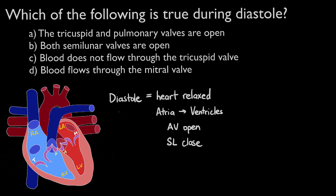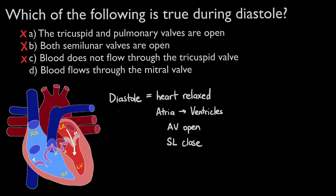Option A states that the tricuspid valve and the pulmonary valve are open. The tricuspid valve will indeed be open to allow blood from the right atrium to go to the right ventricle, but the pulmonary valve will not be open because it prevents blood from flowing from the pulmonary artery back into the right ventricle. So option A is false. Option B states that both semilunar valves are open — they will be closed to ensure blood doesn't flow back into the ventricles, so B is false. Option C says blood will not flow through the tricuspid valve — we know it definitely will, so C is false. Option D says blood flows through the mitral valve — the mitral valve will be open to allow blood to flow from the left atrium to the left ventricle, so option D is the correct answer.